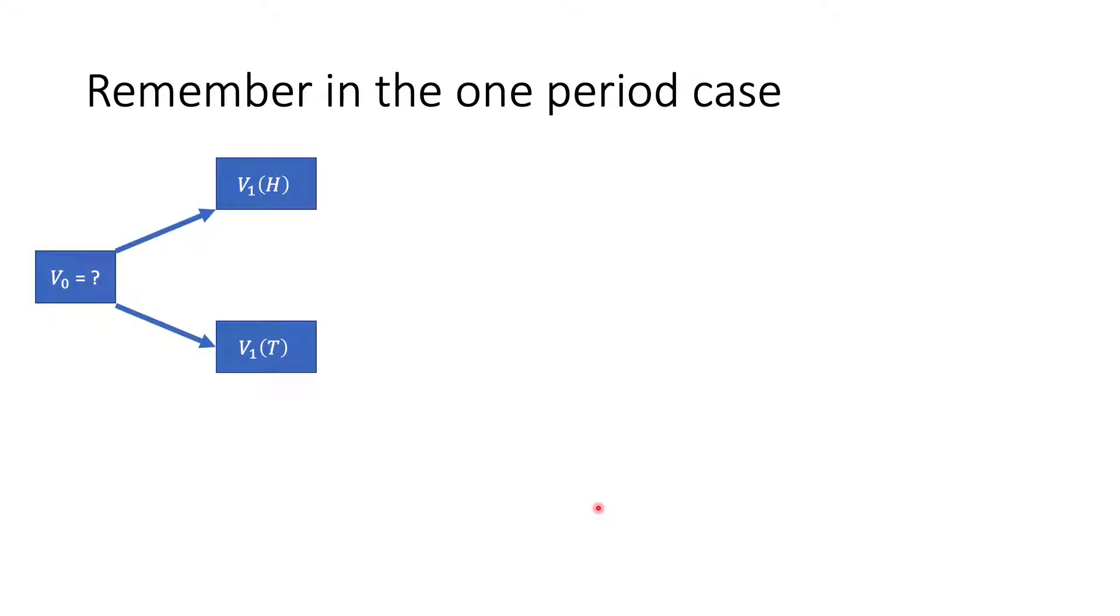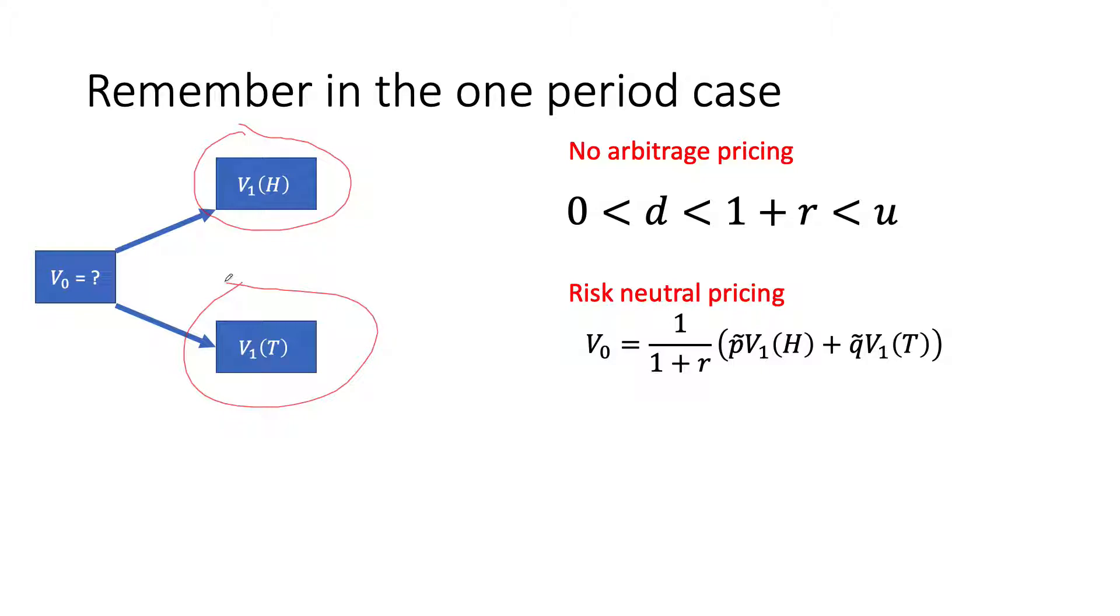I will bring as a reminder some important concepts that we developed in the one period binomial model. If you have a derivative security today that we don't know the price, but we know the payoff of the derivative security at maturity, and when we assume that we have no arbitrages holding, then we develop that the risk-neutral pricing probability. If you look at this carefully, what it tells us is for any derivative security in the one period binomial model, if we know the payoff in the case that coin toss results in a head, and we know the payoff if the coin toss results in a tail, then we can use this formula to find the value of the option today.